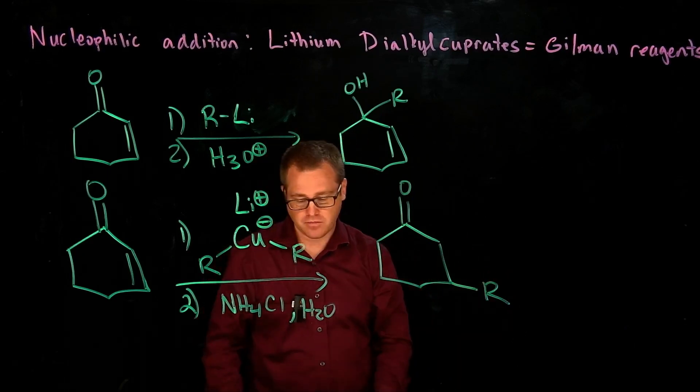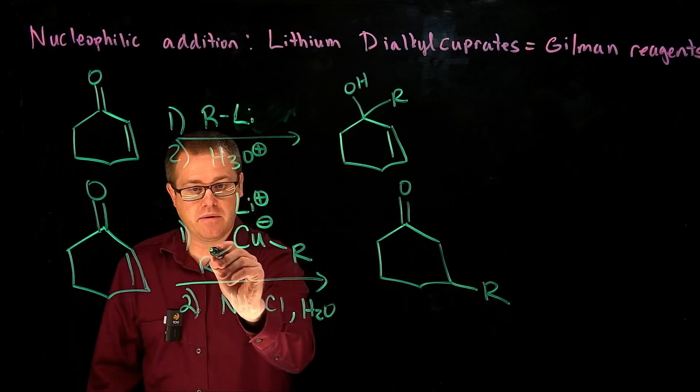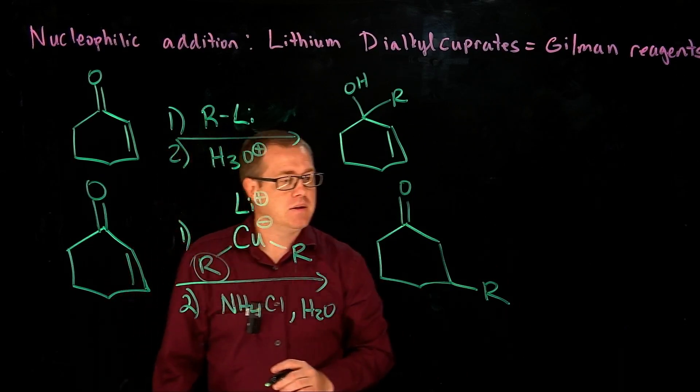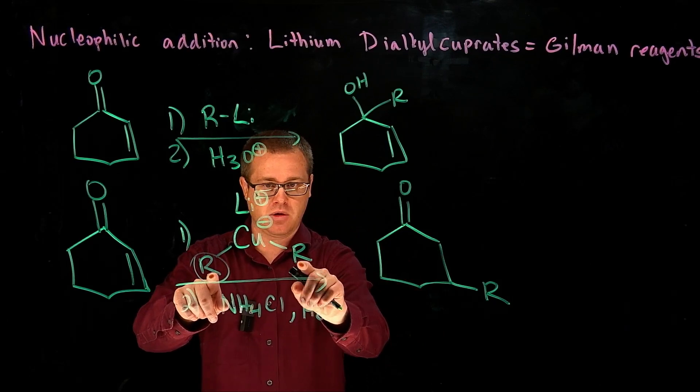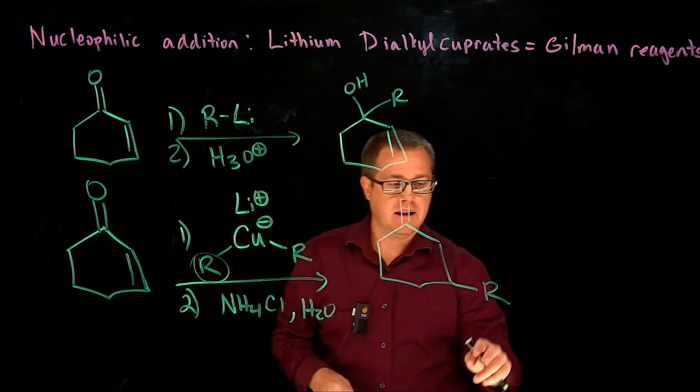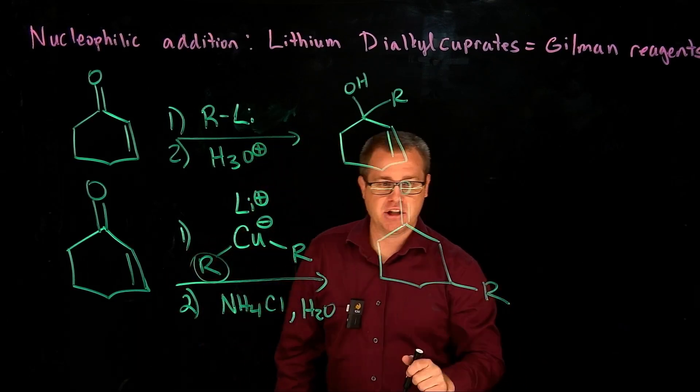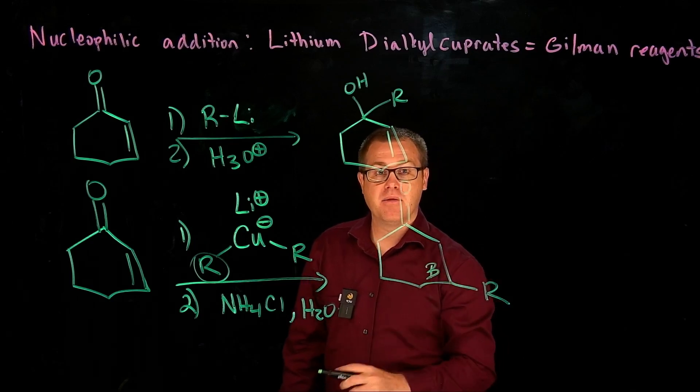But what's cool about this now is watch where the R group adds. It only uses one of these R's, and that's why it's so important that both these R's are the same. Because it's going to use one of the R's, and attaching it to where? The beta carbon.